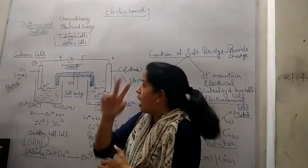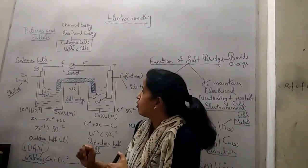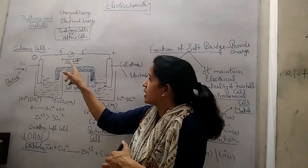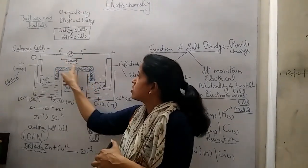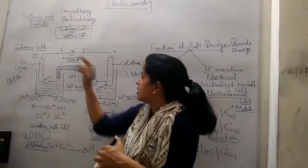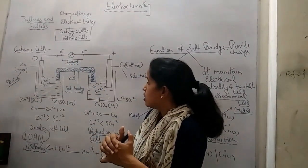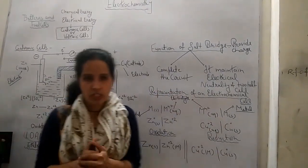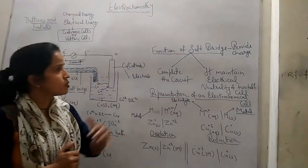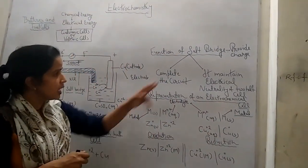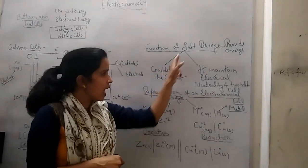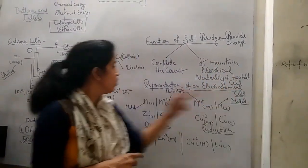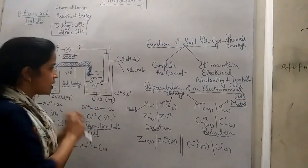So after 4 or 5 minutes the bulb stops glowing — current stops flowing. That is why these two containers are connected with the salt bridge. So what is the function of the salt bridge here?